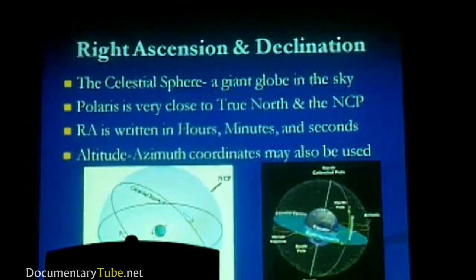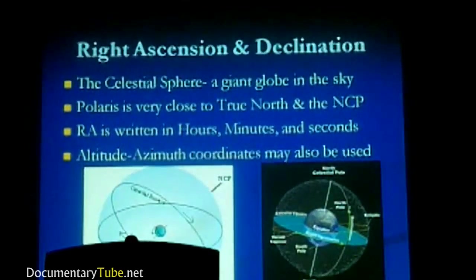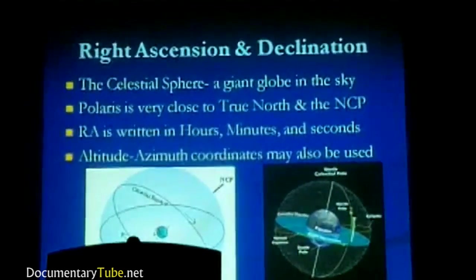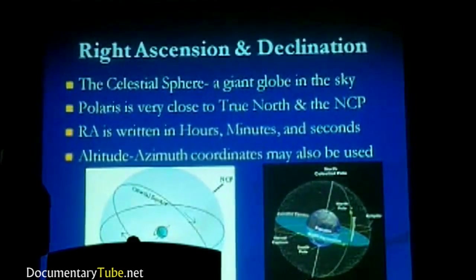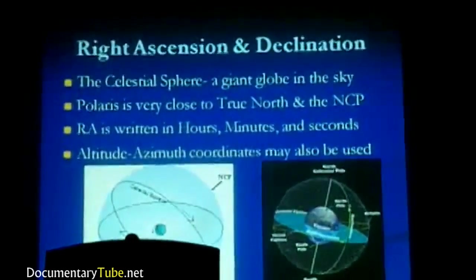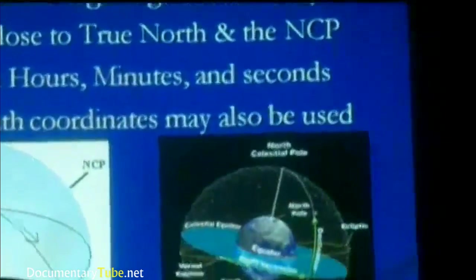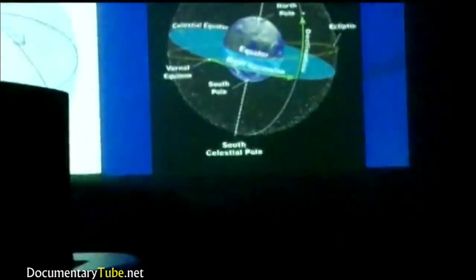Two of the really important things I mentioned earlier are called right ascension and declination. Right ascension and declination are the two coordinates that you can use to find any object in the sky. When you look at a chart and it lists an object's right ascension and declination — like for instance, if you wanted to locate the Andromeda Galaxy — those coordinates are fixed; they never change. Unlike other types of coordinates, they will always remain constant.